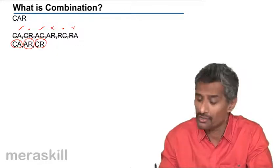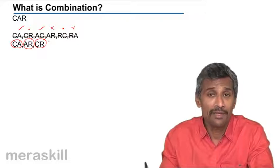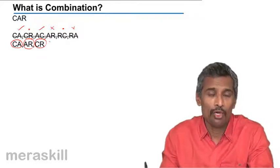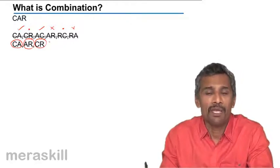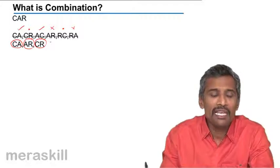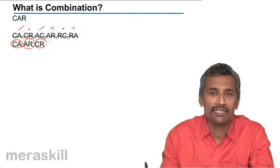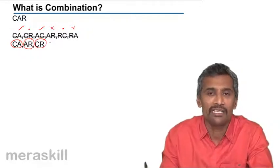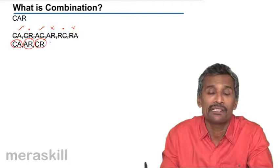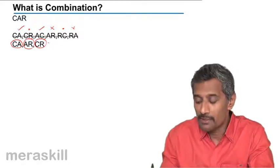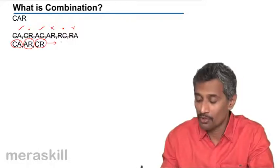Another example: suppose you need to form a committee of five people out of 20 people. You could select PQRS or PRQS or PSQR — ultimately you are selecting the same people. Whom you select first is not important. Hence, this becomes a combination where order is not very important.